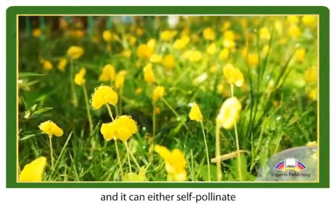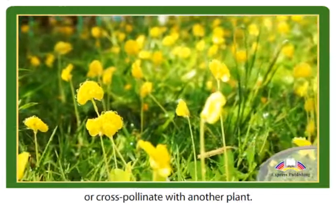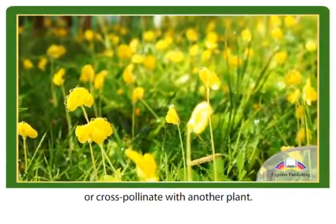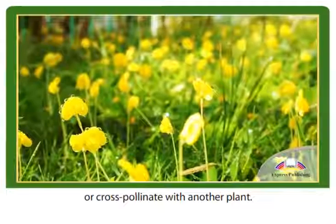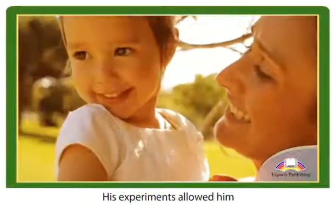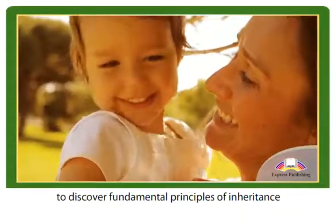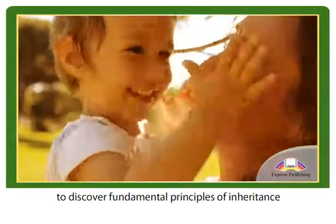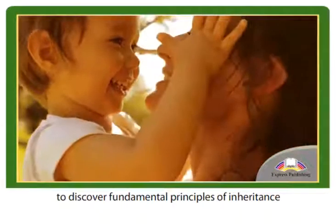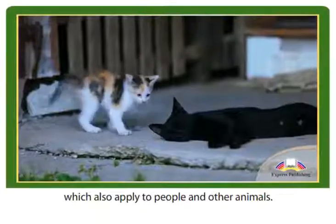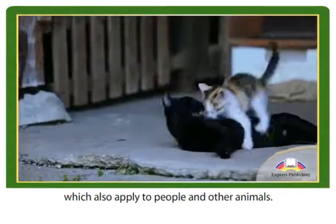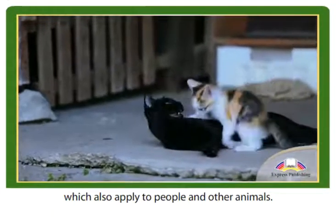The pea plant can either self-pollinate or cross-pollinate with another plant. His experiments allowed him to discover fundamental principles of inheritance, which also applied to people and other animals.